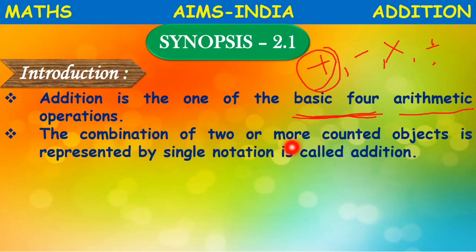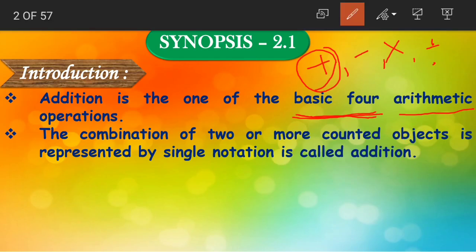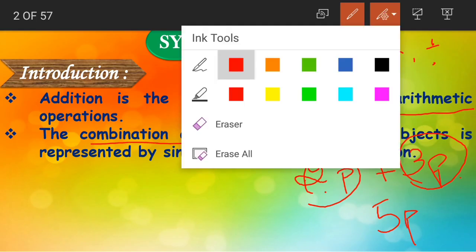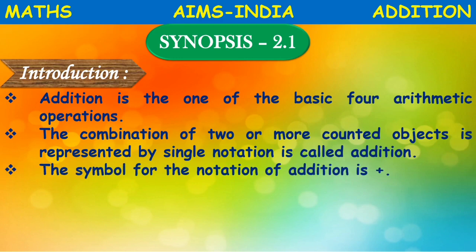The combination of two or more counted objects represented by a single notation is called addition. For example, I have two pencils and my friend has three pencils. How many pencils do we have together? We combine these two objects — two plus three is five. So the combination of counted objects is called addition.